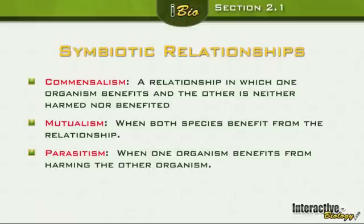Can you think of an example of mutualism? There's a bird that cleans an alligator's teeth and gets food from it — that's a good example of mutualism. Also, flowers: how do plants reproduce? Pollination. How does pollination happen? Bees, wind, other insects. The bee gets nectar from the flower, then flies to another flower transferring pollen. So both the bee and the plant benefit — that's mutualism.